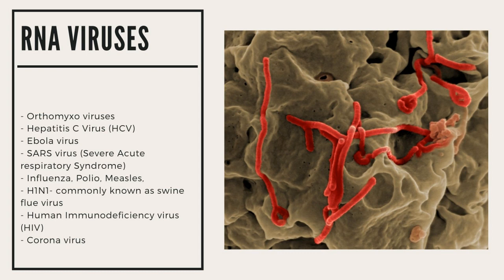Then there is HIV, human immunodeficiency virus. Some people consider HIV a pandemic. The first case was discovered in 1981. Till date there are more than 40 million people who have contracted HIV, and nearly 800,000 people die every year because of HIV. And lastly, of course, there is coronavirus.